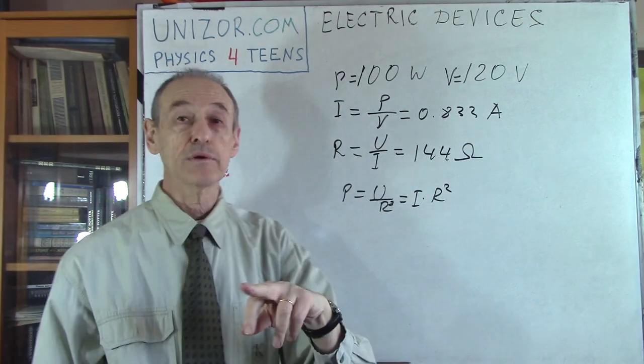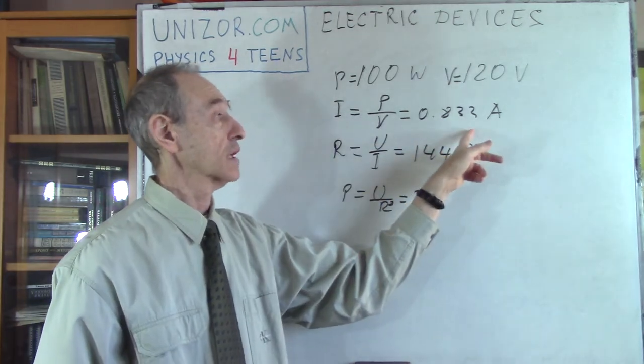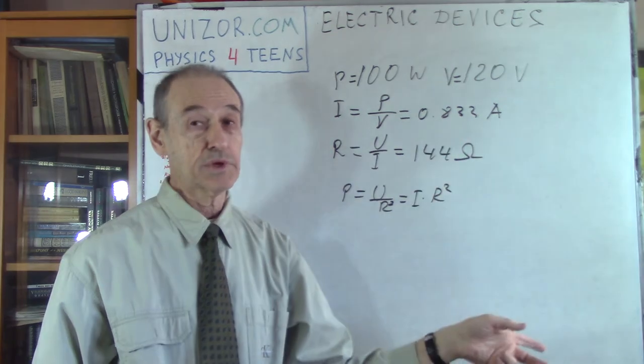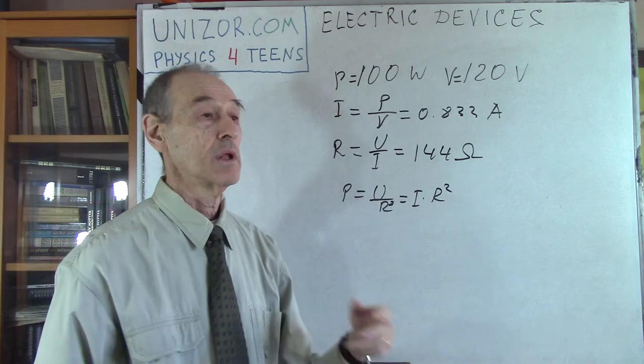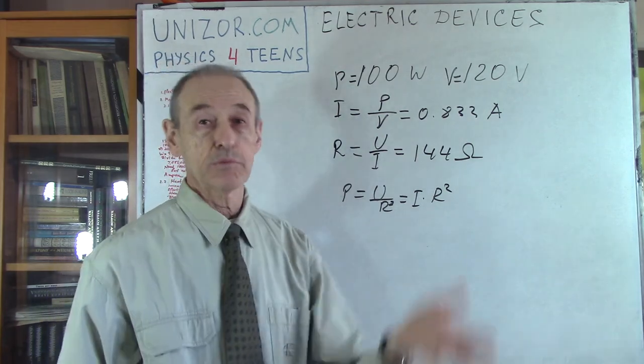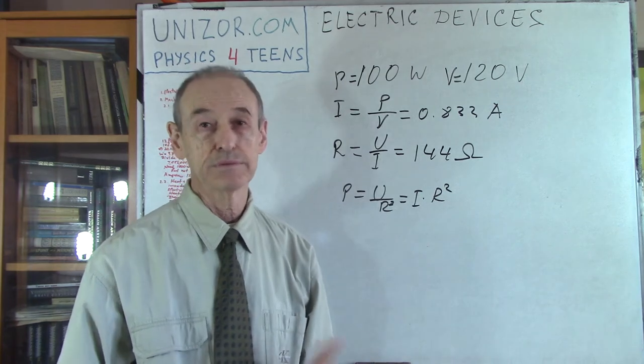You see, compare it with electric motor 6.8 amperes. Right? This is 0.833. So it's significantly less. Like what? Like eight times less. Right? Well, obviously, I mean the motor is doing real work. And this is, well, lamp. Lamp is a lamp.